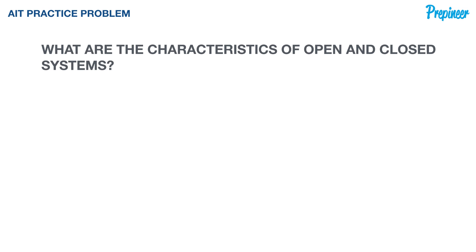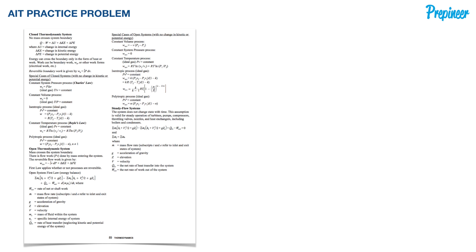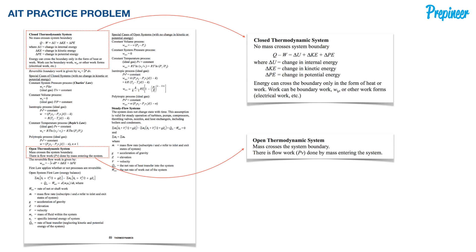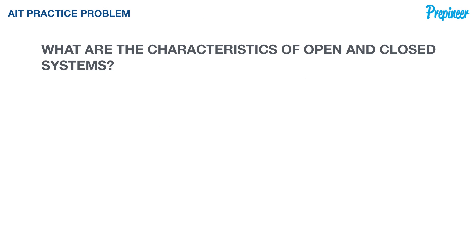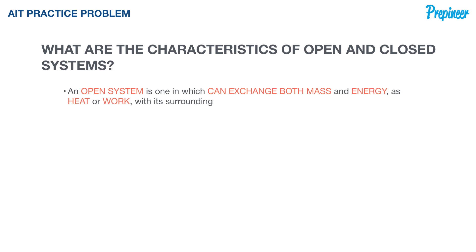We can get a general definition of these two systems by turning to page 89 of the NCEES reference handbook, focusing on the left column, which gives us definitions of closed and open thermodynamic systems. Pages 85 through 101 of the NCEES reference handbook version 9.4 for computer-based testing cover thermodynamics equations, symbols, tables, and information. Let's highlight key points we must remember for both this conceptual AIT and the quantitative problems we'll encounter.